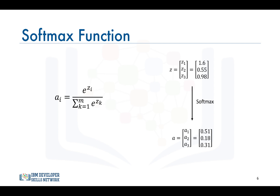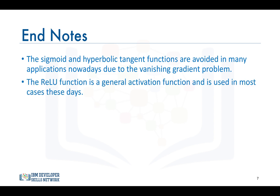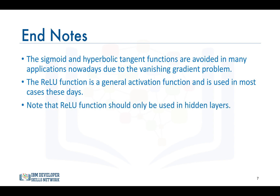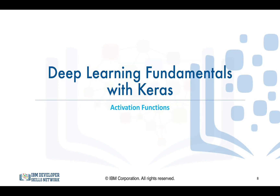In conclusion, the sigmoid and tanh functions are avoided in many applications nowadays since they can lead to the vanishing gradient problem. The ReLU function is widely used today, and it's important to note that it's only used in the hidden layers. When building a model, you can begin with the ReLU function and then switch to other activation functions if ReLU does not yield good performance. This concludes this video on activation functions.